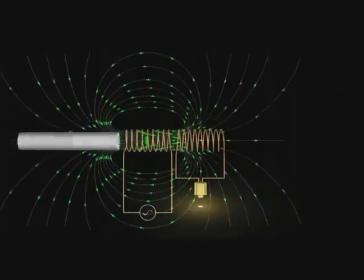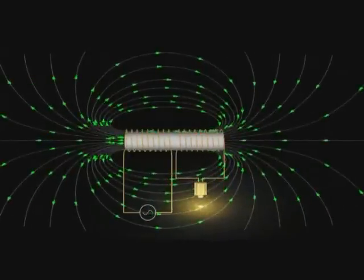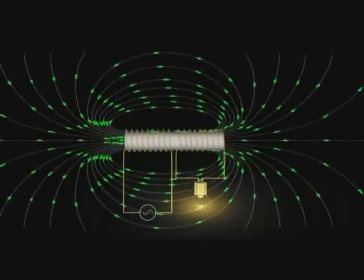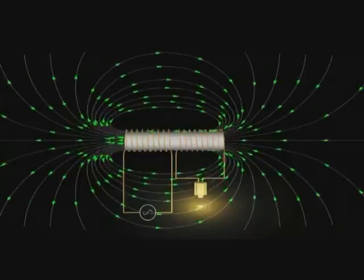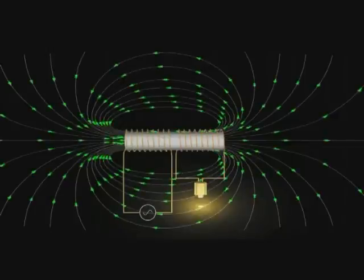Let's see what happens when we use a core with our transformer. In this case, the iron core directs the magnetic field through itself and enhances the transfer of energy from the primary coil to the secondary.